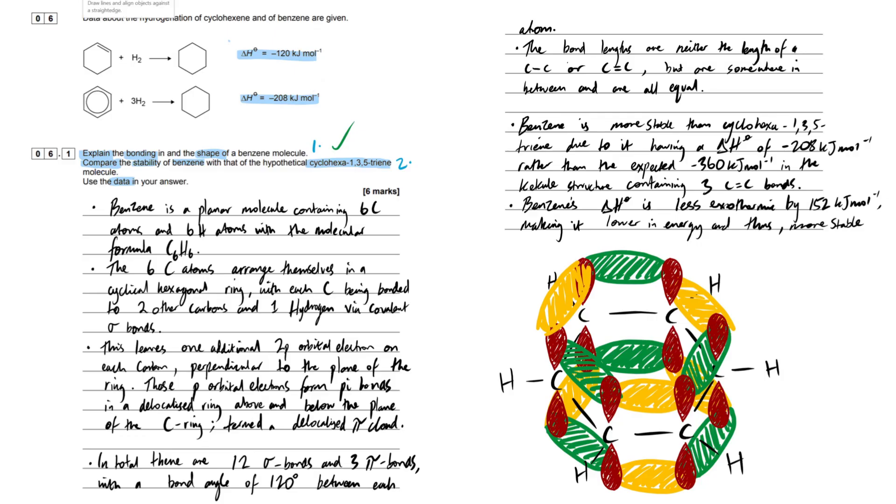Last bullet point: Benzene's enthalpy change for hydrogenation is less exothermic by 152 kilojoules per mole, making it lower in energy and thus more stable. Because they asked us to use data, I mentioned all these numbers. We want to mention minus 360, even though they haven't told us explicitly. If it's less exothermic, it's more stable - by 152 kilojoules per mole.